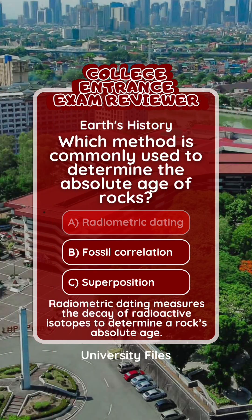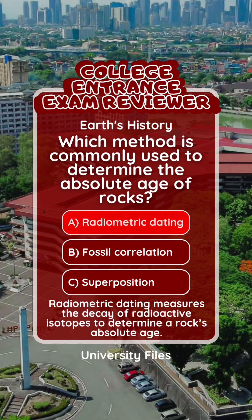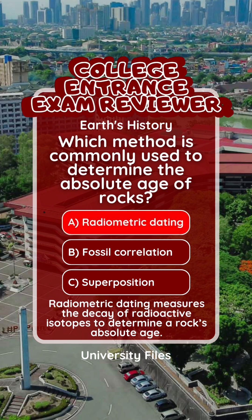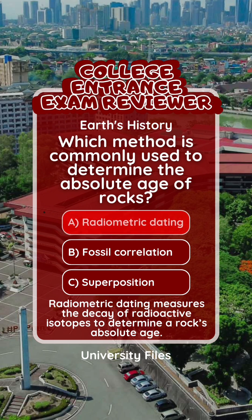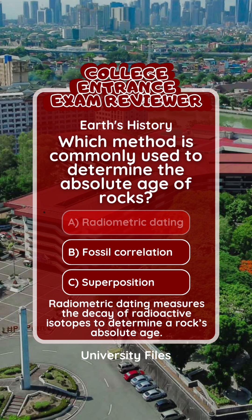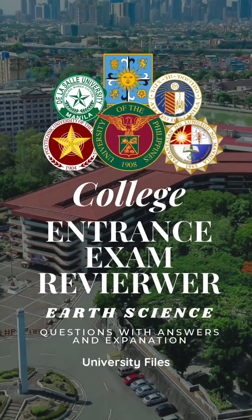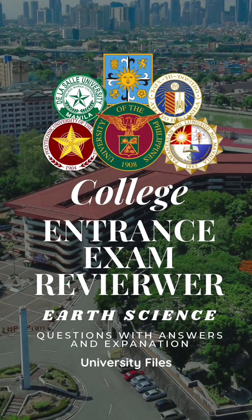The correct answer is letter A. Radiometric dating. Radiometric dating measures the decay of radioactive isotopes to determine a rock's absolute age.